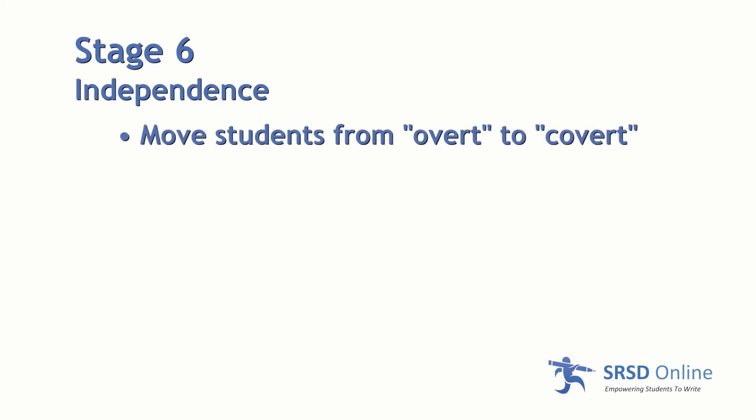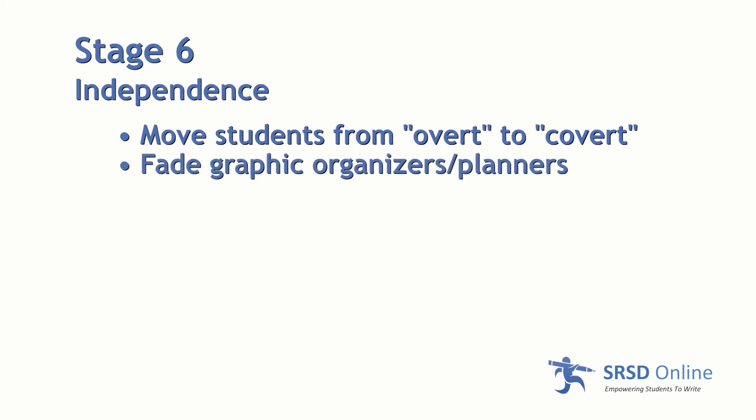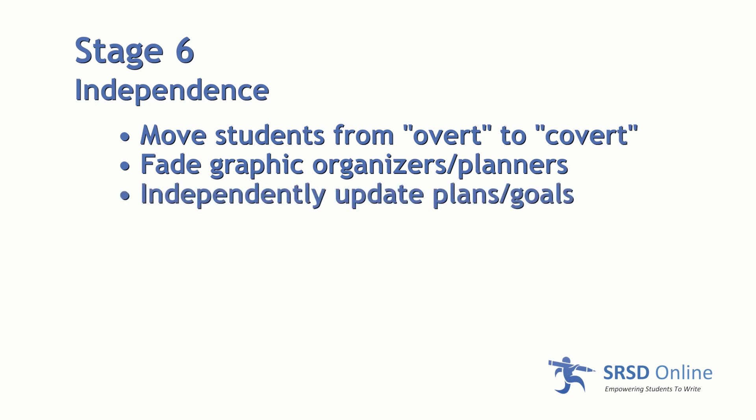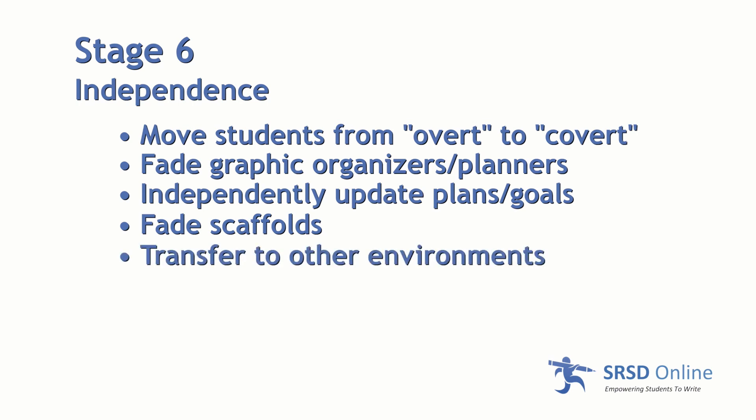Stage six, the independent stage, is what we're all working for. We provide an opportunity to move students who have not already switched from overt to covert writing. The use of graphic organizers and self-instruction planners is usually not necessary for the majority of students, so this is where they fade out. Our goal is to have students independently update their own self-regulation plans. Generally, this stage continues the fading of scaffolds from stage five to complete independence. Work in this stage also ensures that transfer to other environments is implemented.